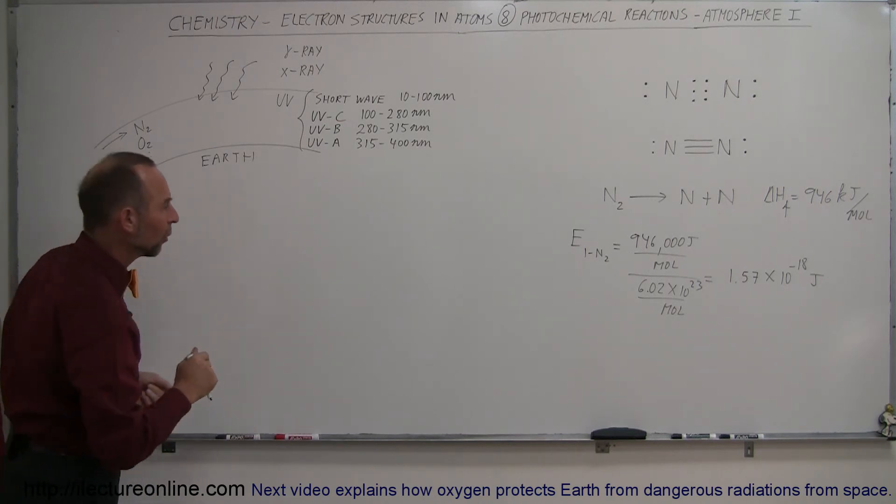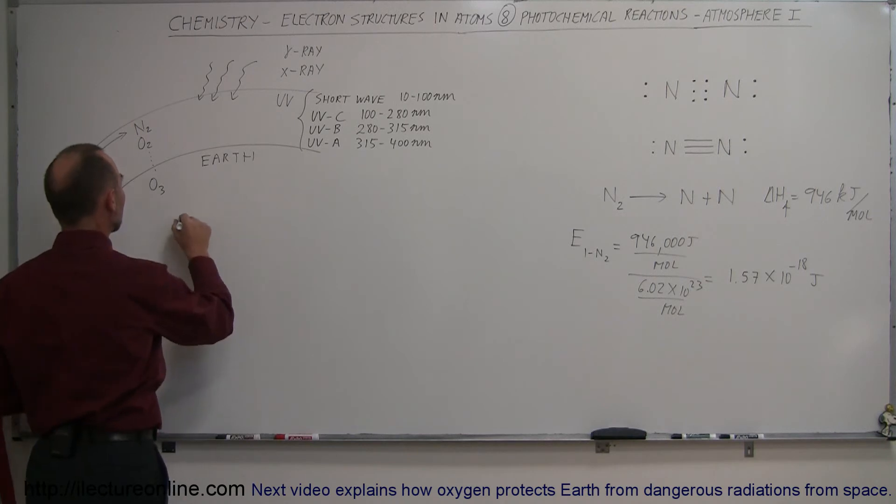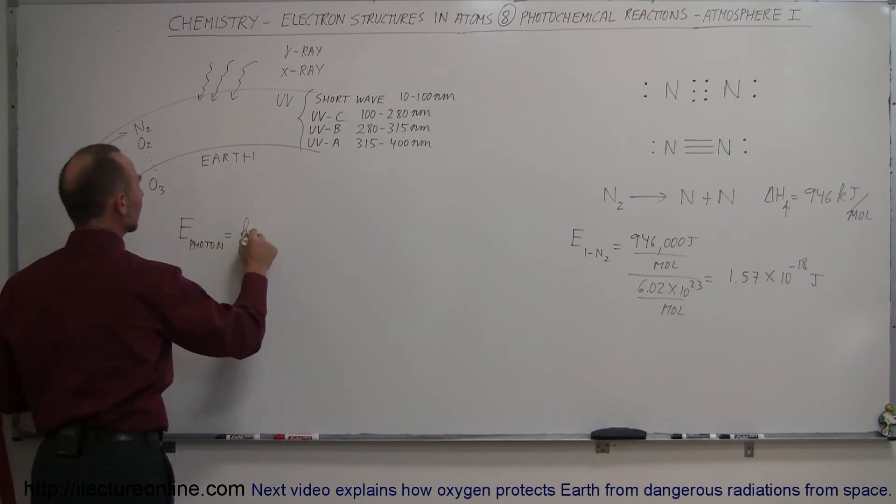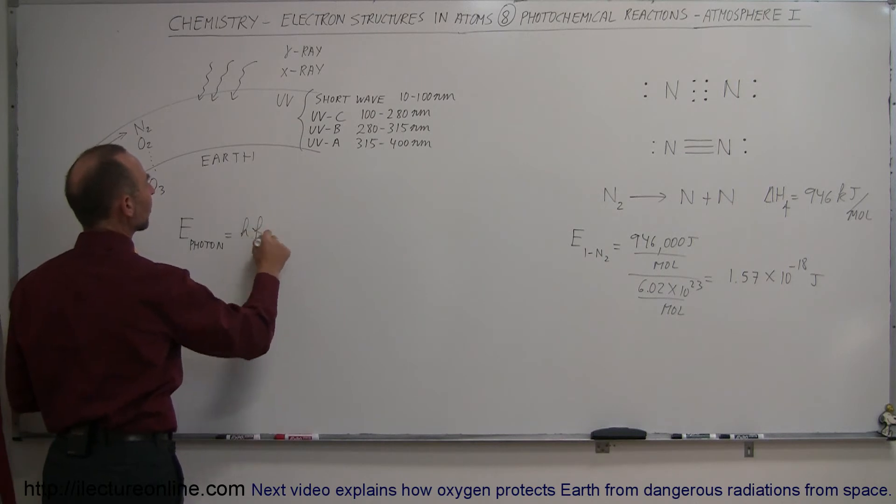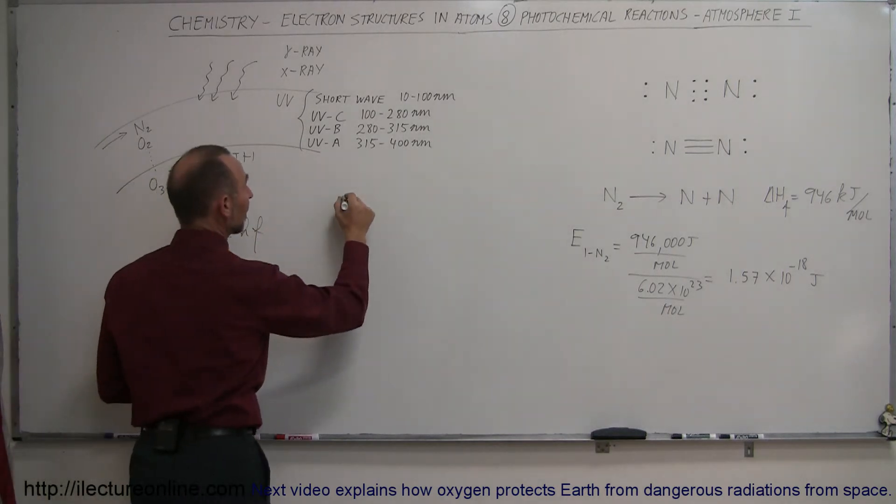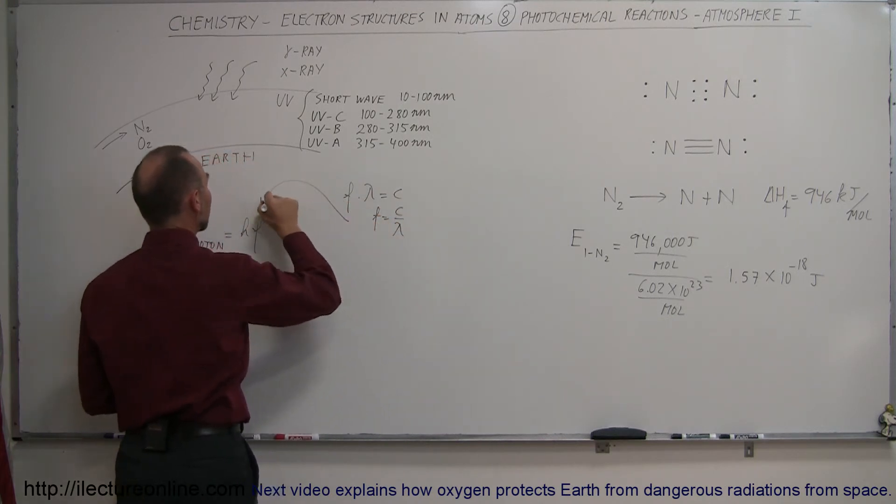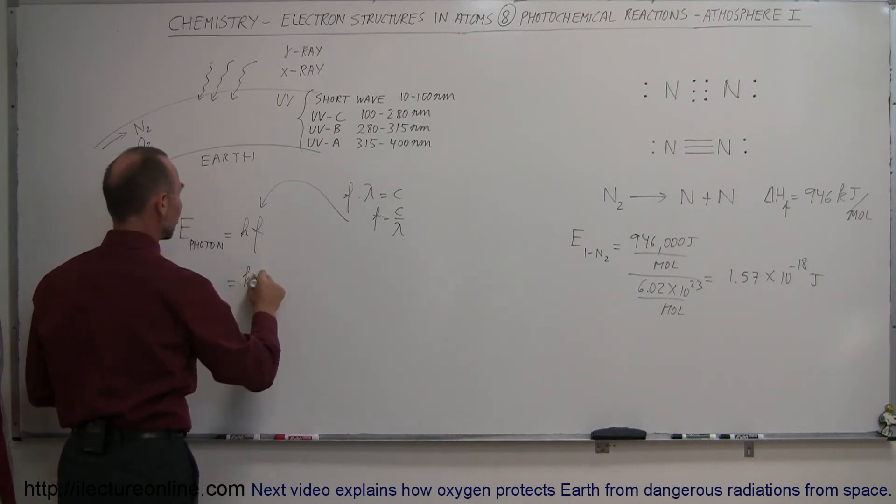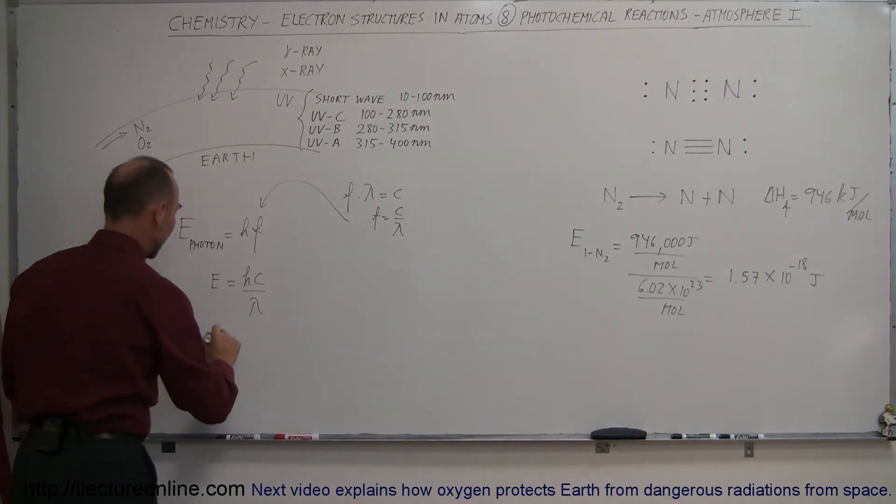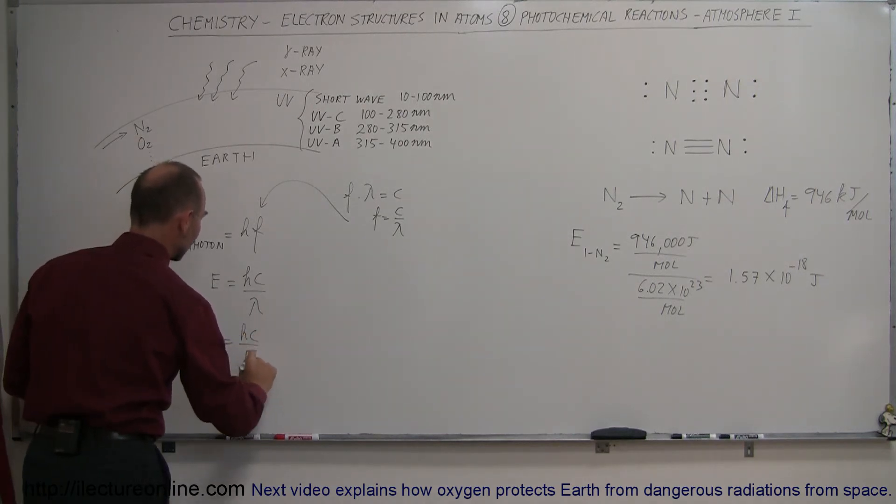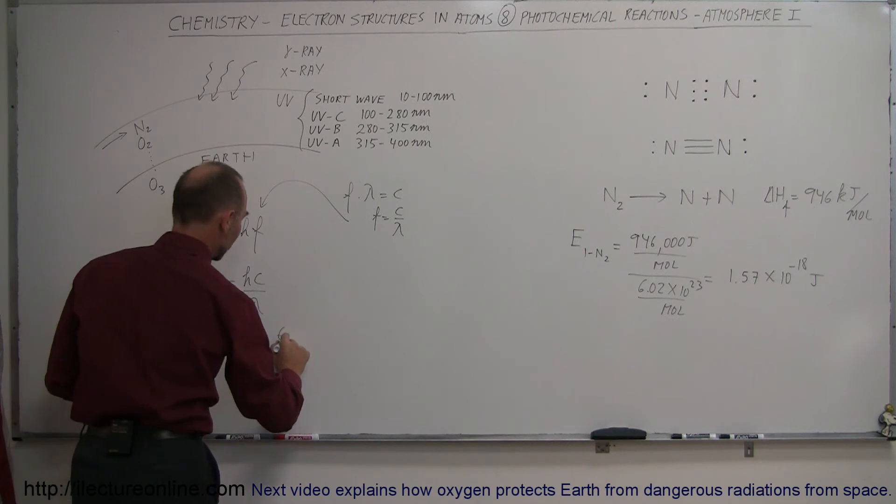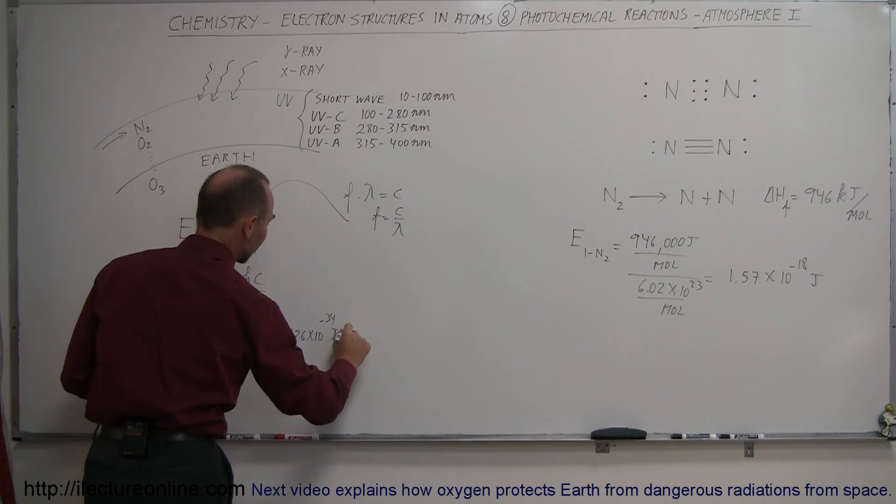Let's now figure out how much energy that is. The energy of a photon equals Planck's constant times the frequency. Since we know frequency times wavelength equals the speed of light, F equals C divided by lambda, and we can plug that in. The energy of a single photon is Hc over lambda. If we solve that for lambda, lambda equals Hc over the energy of the photon. H is 6.626 times 10 to the minus 34 joules times seconds.